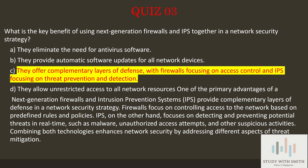Next Generation Firewalls and Intrusion Prevention Systems, IPS, provide complementary layers of defense in a network security strategy. Firewalls focus on controlling access to the network based on predefined rules and policies. IPS, on the other hand, focuses on detecting and preventing potential threats in real-time, such as malware.